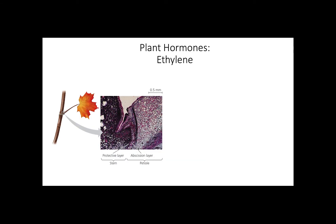Finally, we have ethylene. Ethylene is known to be a gaseous hormone and it is produced by most parts of the plant. High concentrations of ethylene are seen during senescence and leaf abscission. Ethylene is primarily responsible for promoting ripening of many types of fruit and leaf abscission. So next time you think about the fall season, remember ethylene as the hormone causing all those leaves to detach from the trees.